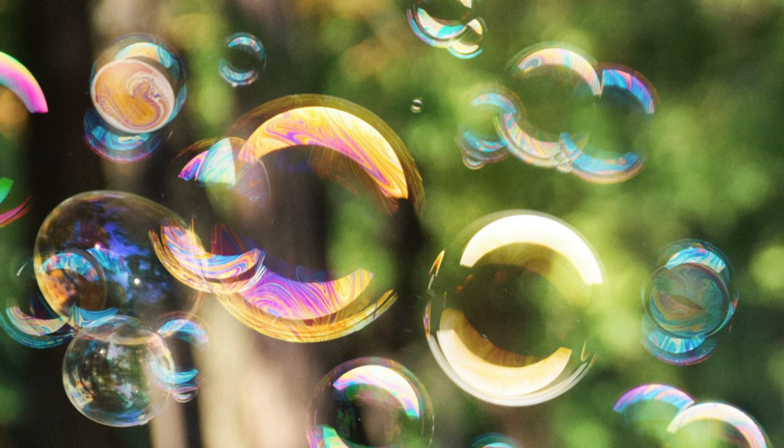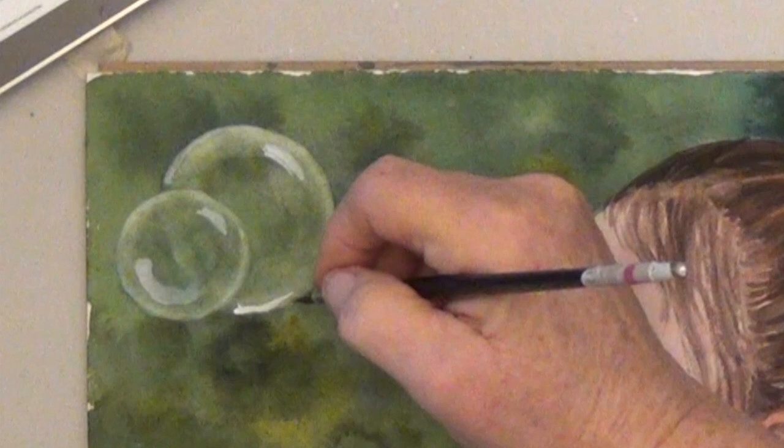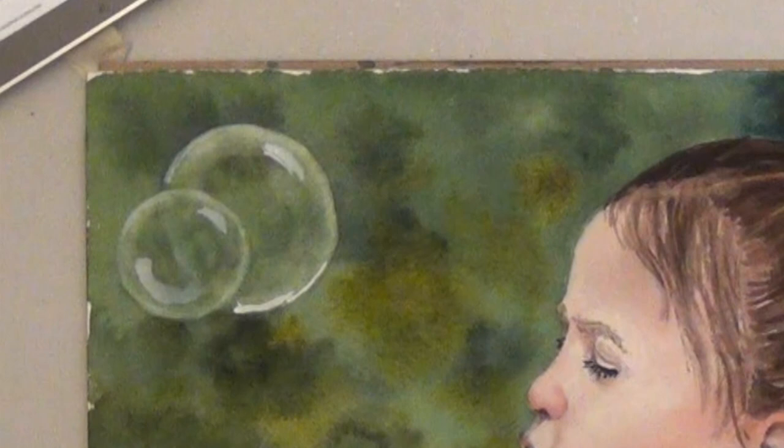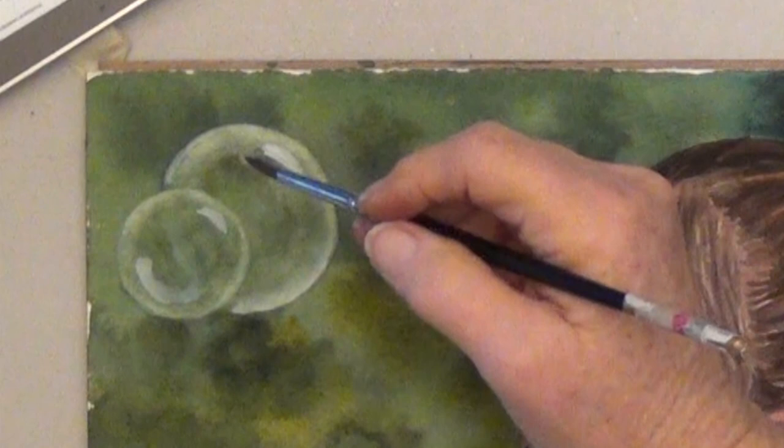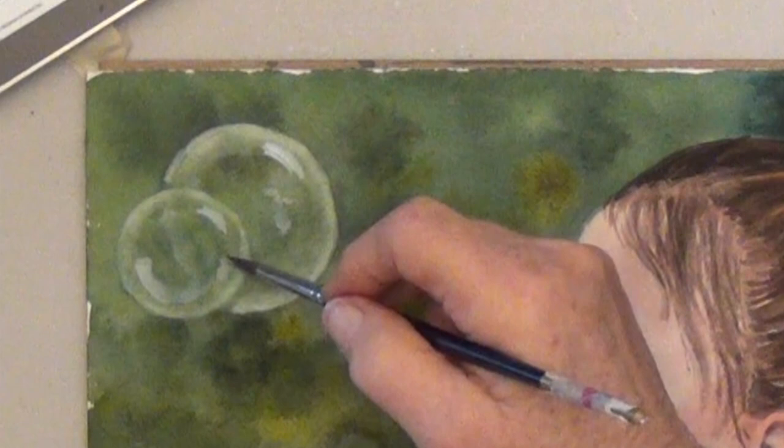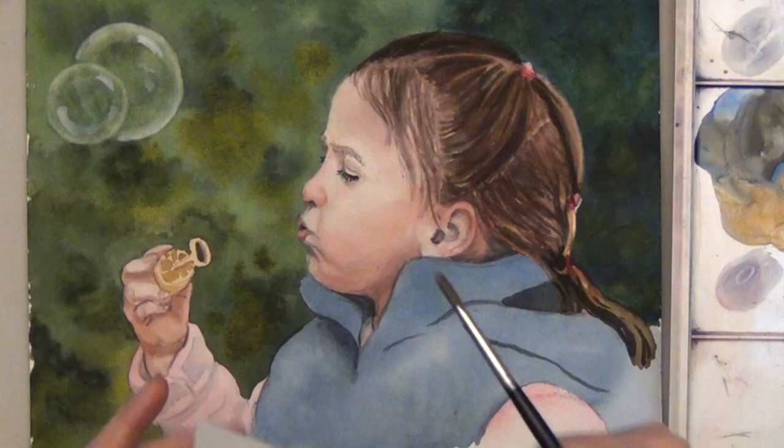Bubbles can have almost any kind of coloration. It just depends on the way they're reflecting the lights and colors around them, so there isn't any real right or wrong. Whatever looks like a good bubble to you, do some squiggles here and there. Does that look like a bubble? I think it does.